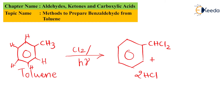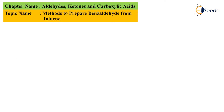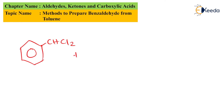This is not the final product we need. The product name is benzal chloride. We are going to use this benzal chloride again to obtain our main product, benzaldehyde. For that, we consider the benzal chloride having the CHCl2 group.